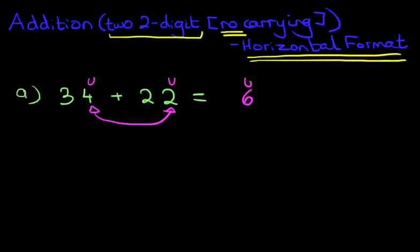Then we're going to add the tens. Let's label them. So we're adding three and two. Three plus two is five. So 34 plus 22 is 56.